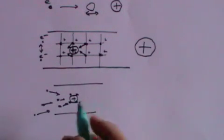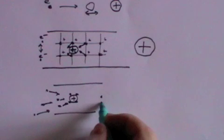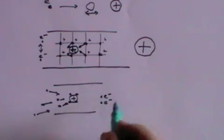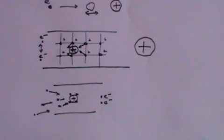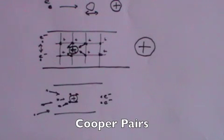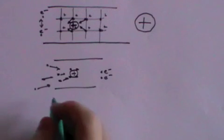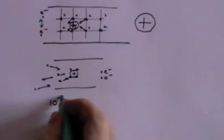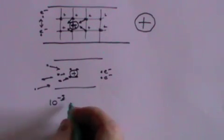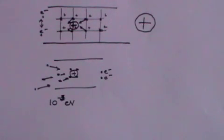And what happens is that there is a quantum mechanical effect whereby electrons form into pairs, and those electron pairs are called Cooper pairs. The trouble is that the energy of bonding of those Cooper pairs is 10 to the minus 3 electron volts, which is a very small energy.